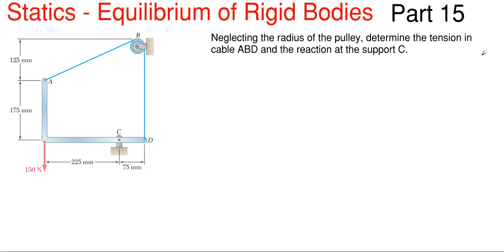What we have going on today is this picture shown on the left, and it states that neglecting the radius of this pulley up here at B, determine the tension in cable ABD and the reaction here at support C. The reaction at C is a pin, so that means we are going to have a horizontal and vertical reaction here. We will need to determine how much tension is in this cable because that will help us get to this reaction at C.